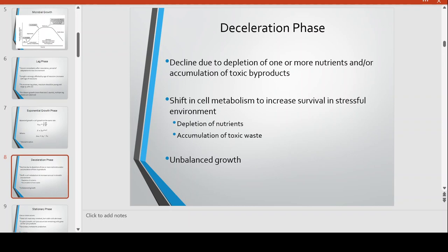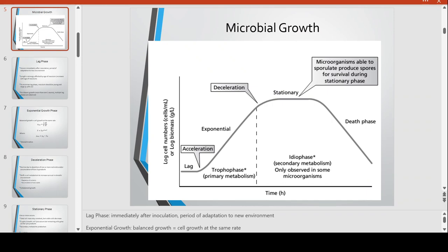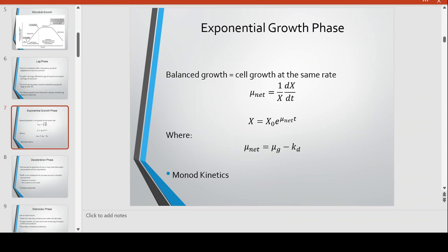After the exponential growth phase, there is deceleration. Deceleration happens because of the depletion of one or more nutrients and/or the accumulation of toxic byproducts. There is now a shift in metabolism to increase survival in a stressful environment. Looking at the growth curve, the previously linear curve now bends into a less-than-linear, almost stationary growth — this is unbalanced growth.